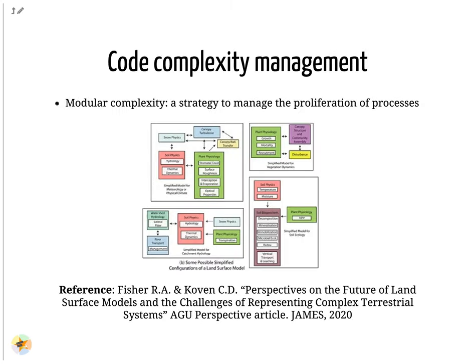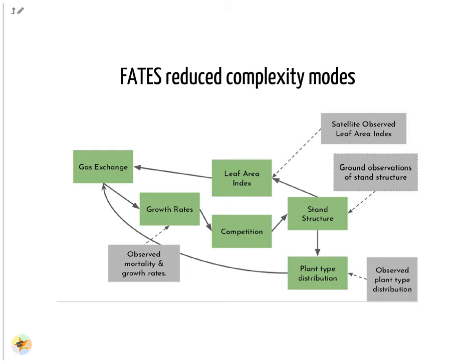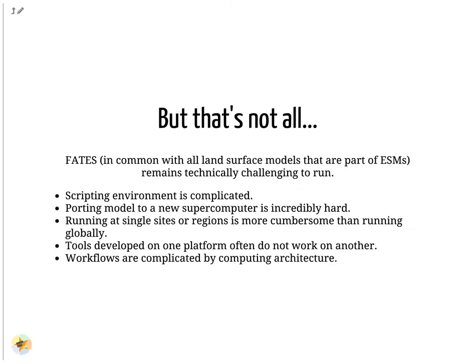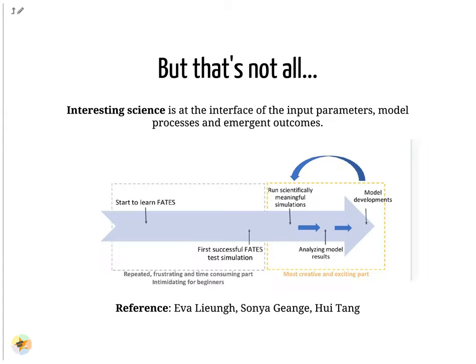The code is fully modular and easy to update. To help code developers, a number of reduced complexity modes were made available. However, we know that more needs to be done for simplifying the usage of FATES and reduce the learning curve. Running FATES remains technically challenging. The scripting environment is complicated. Porting the model to new platforms can be incredibly hard. Running at single sites or regions is more cumbersome than running the code globally, and workflows are complicated to put in place. Interesting science is at the interface of the input parameters, model processes and emergent outcomes. We know it takes a very long time for a new researcher to run successfully a simple FATES test simulation — in general it takes several months and it is very frustrating.